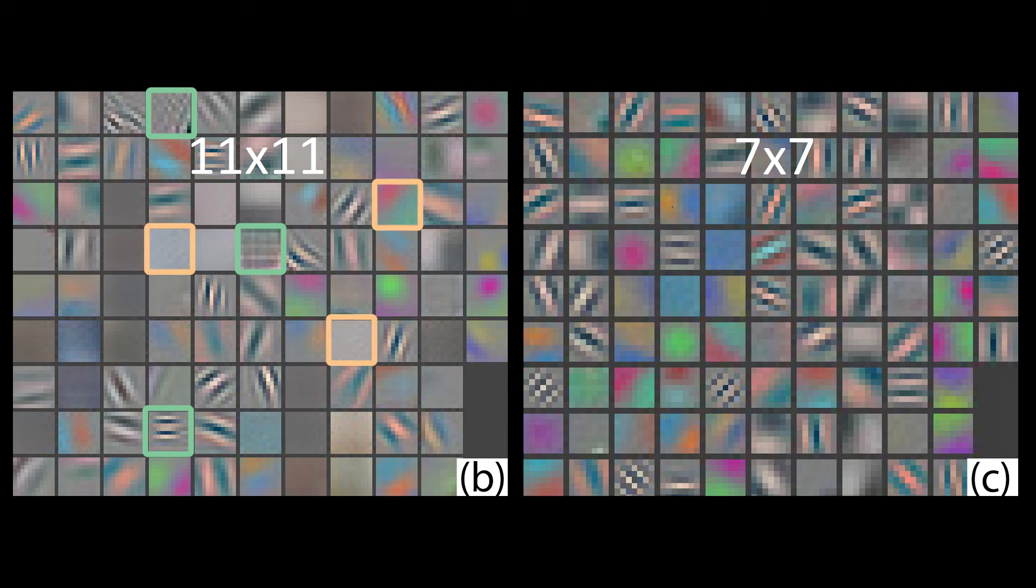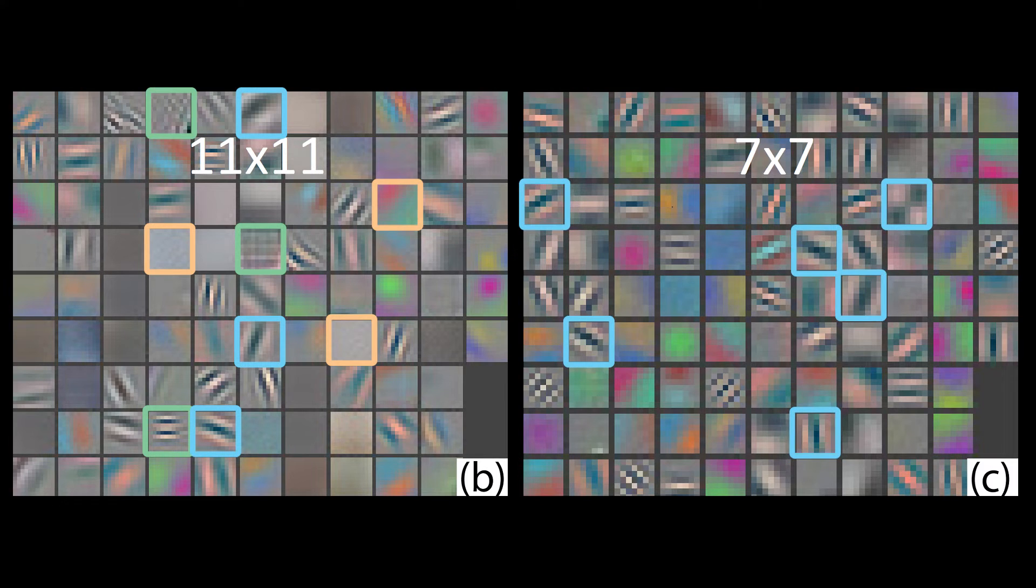Notice the mix of high frequency and low frequency patterns in the 11 by 11 kernel, with poor coverage of medium sized patterns. In the 7 by 7 kernel, the medium frequency patterns are covered much better.